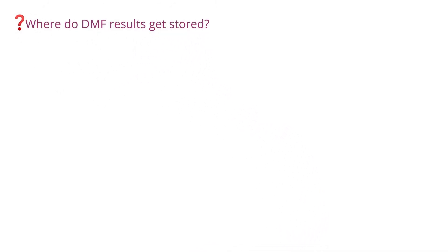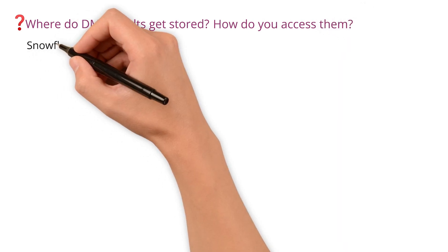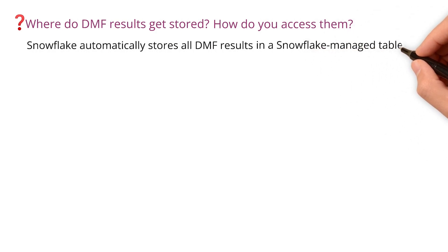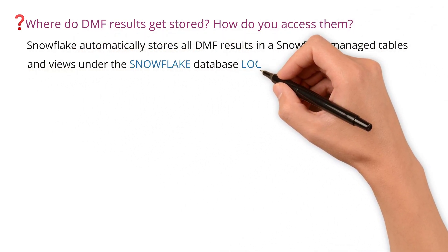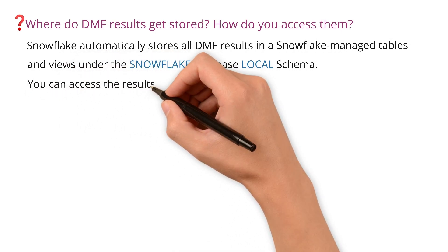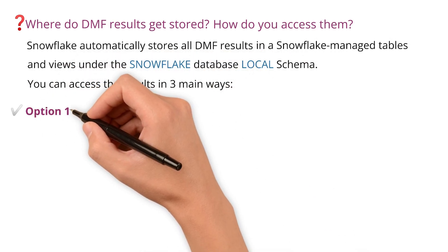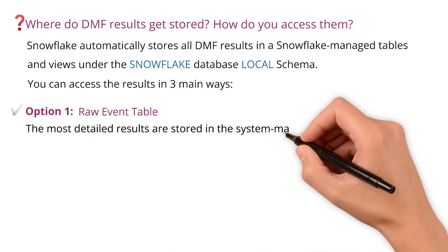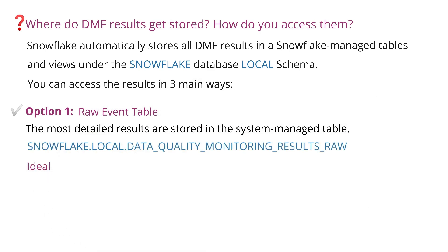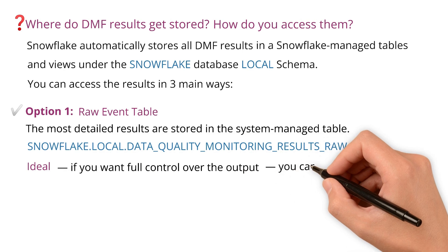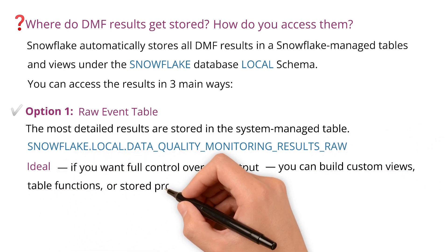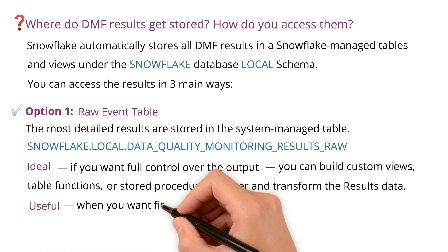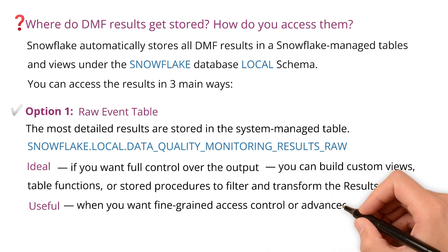Where do DMF results get stored and how do you access them? Snowflake automatically stores all DMF results in Snowflake-managed tables and views under the Snowflake database local schema. You can access the results in three main ways. Option one: raw event table — the most detailed results are stored in a system-managed table, ideal if you want full control over the output. You can build custom views, table functions, or stored procedures to filter and transform the results data.